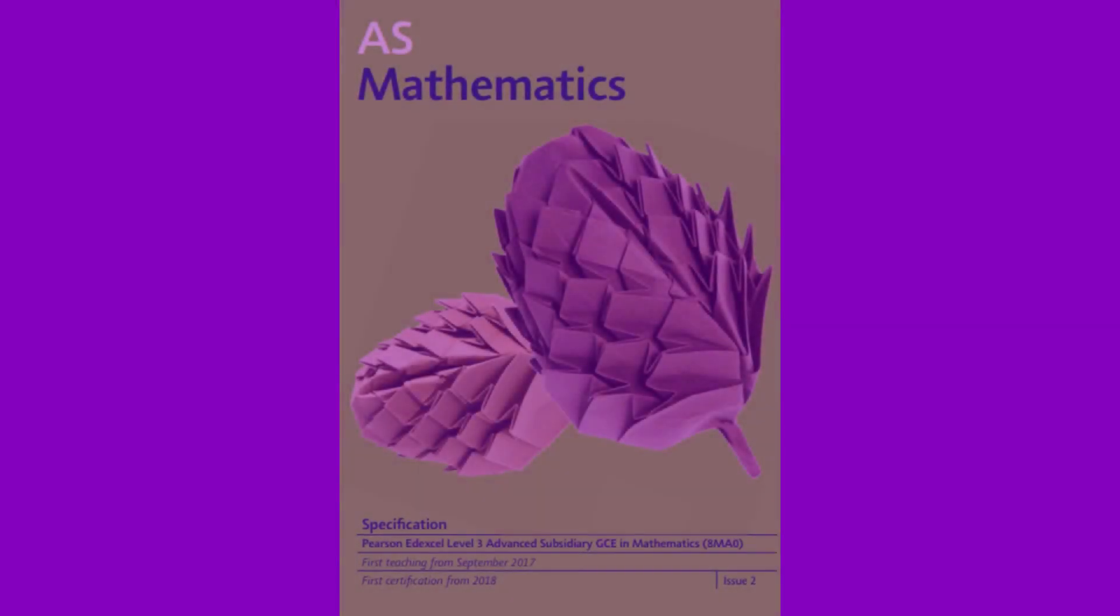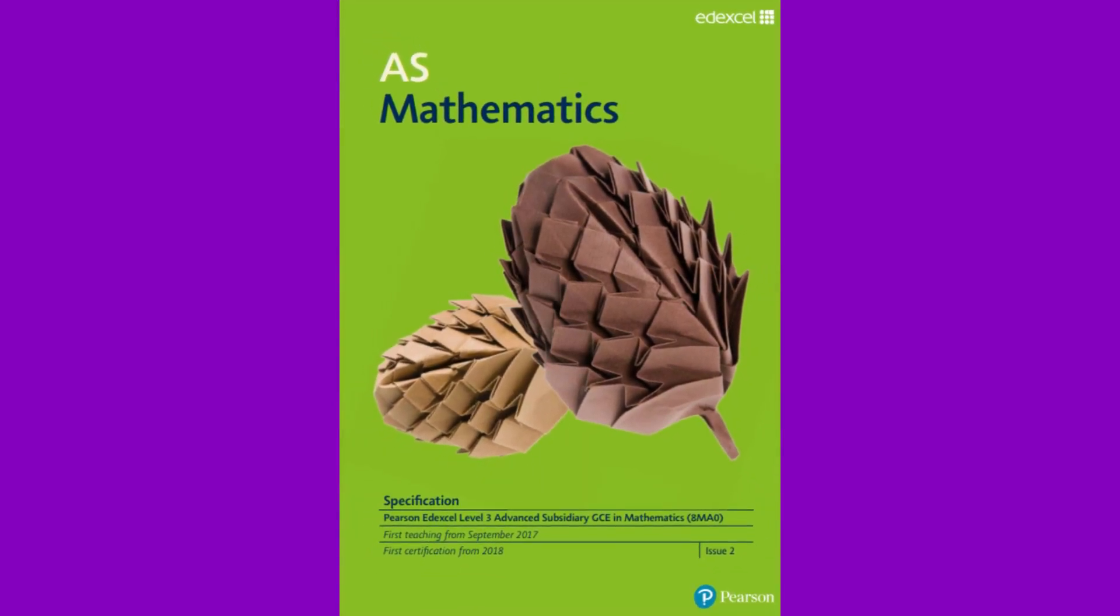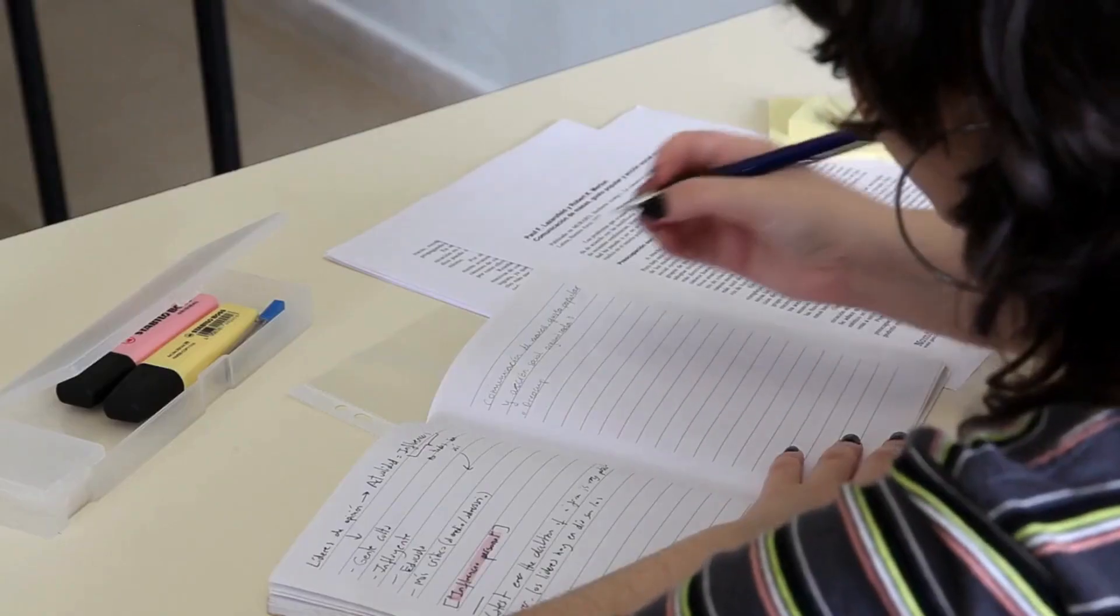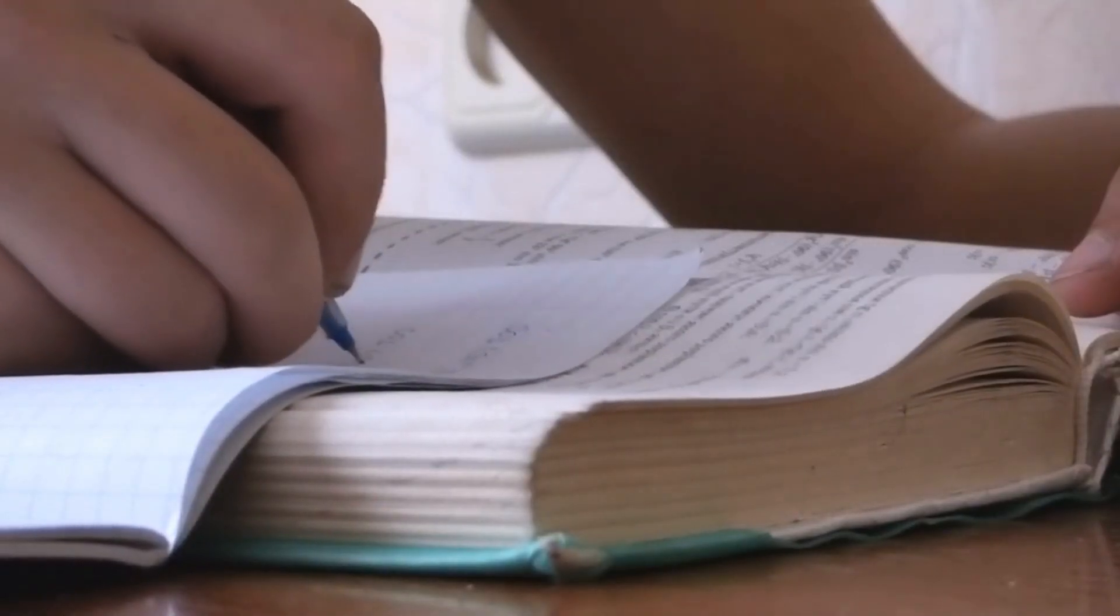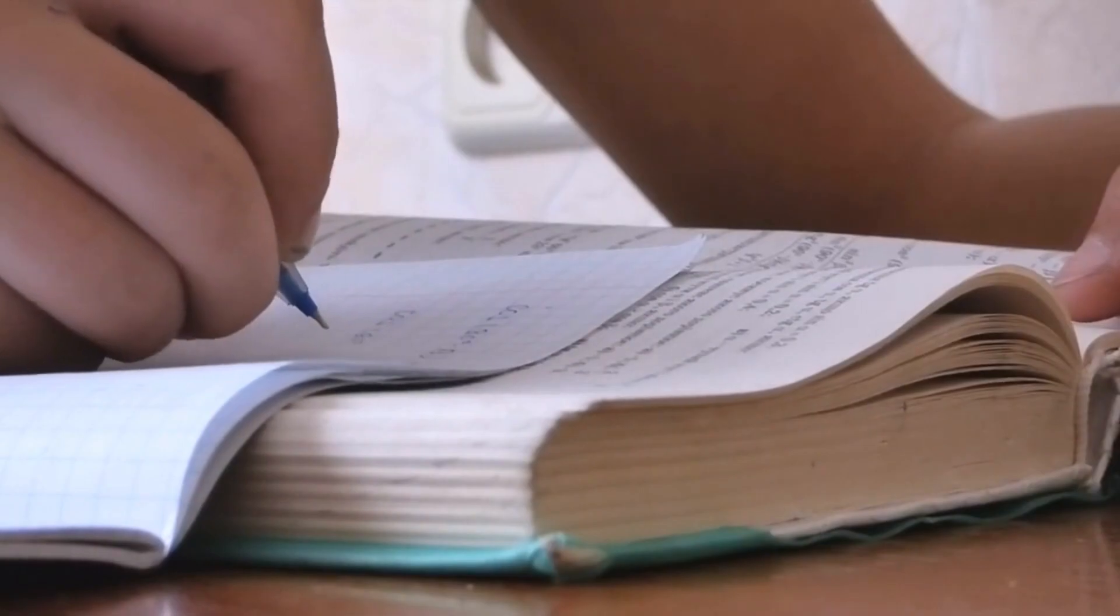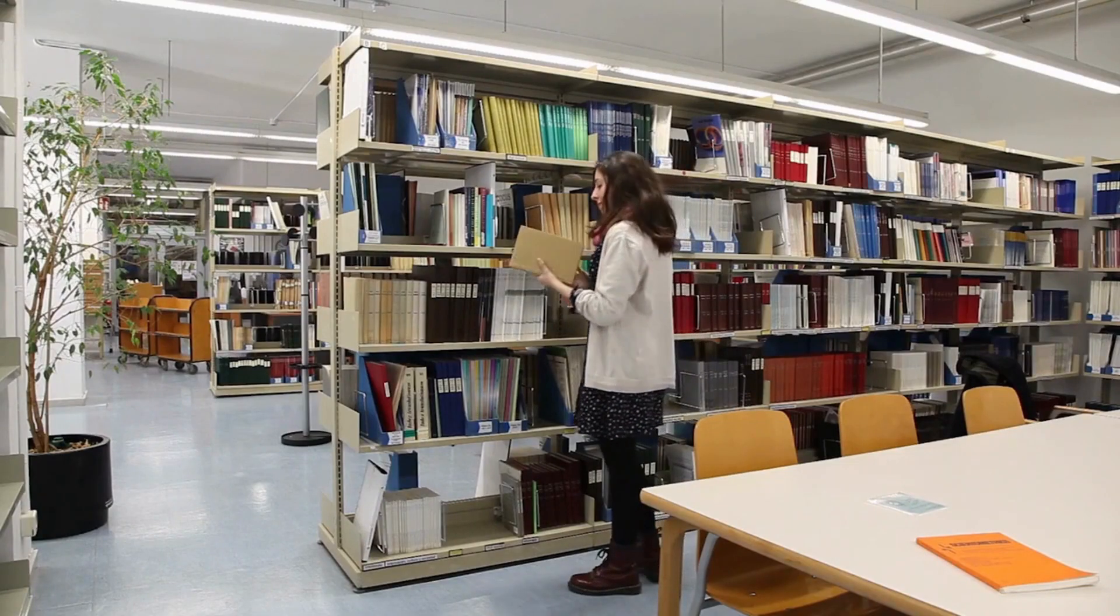You need to find the course specification of your exam board, find out what you will be learning, and see if what you learned at GCSE will help you. Then go over this material and do the same if you are planning for university or joining the workforce.